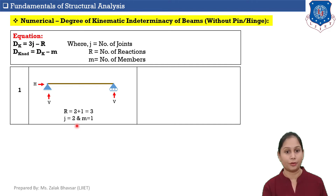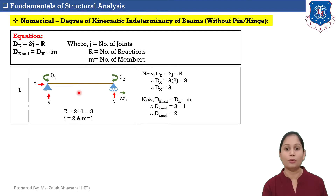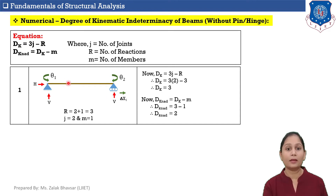Number of members M is equal to 1 for the given beam. Putting values of R and J into the equation: DK equals 3J minus R equals 3 times 2 minus 3, which gives DK equals 3. This means that in the given beam, a total of 3 displacements are possible.